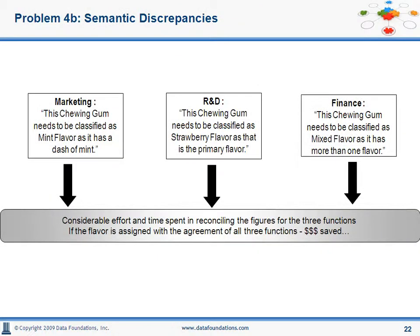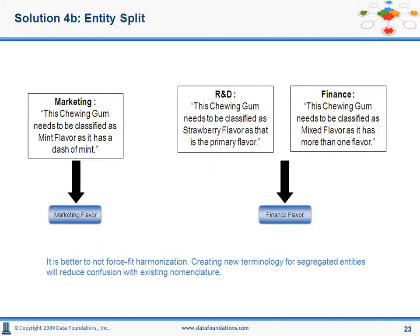We were mentioning earlier about the fact that we are assuming what you see is what it means. In this example, if what you see is not what you mean, or each group sees differently, what should be the approach? Mint? Strawberry? Mix? Looking at entity split in this case, it is better not to force fit. Creating new terminology like 'marketing flavor' rather than 'flavor' will reduce confusion going forward.